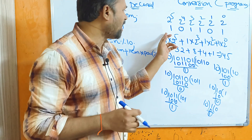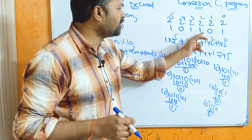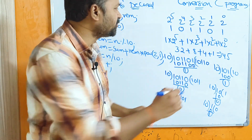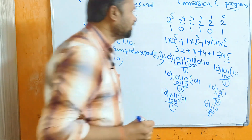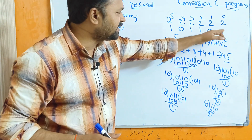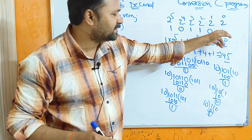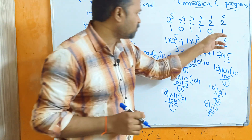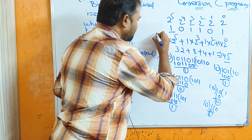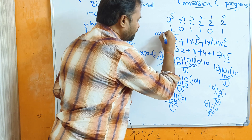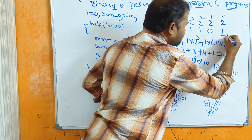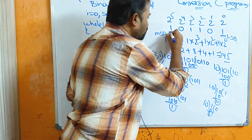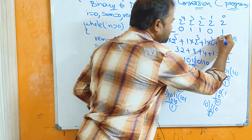Let's take an example first and then we will see the program. We have a binary number: 1 0 1 1 0 1. We need to convert this binary number into decimal. We multiply each bit by the corresponding power of 2. This leftmost bit is called the most significant bit (MSB) and the last one is called the least significant bit (LSB).